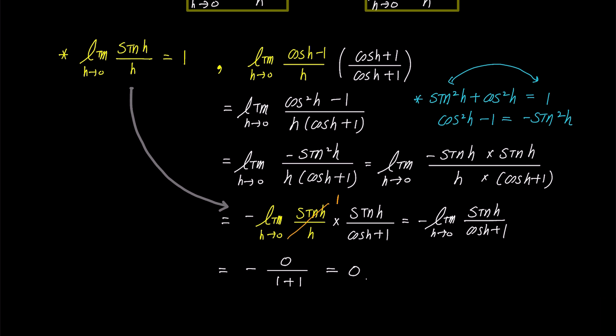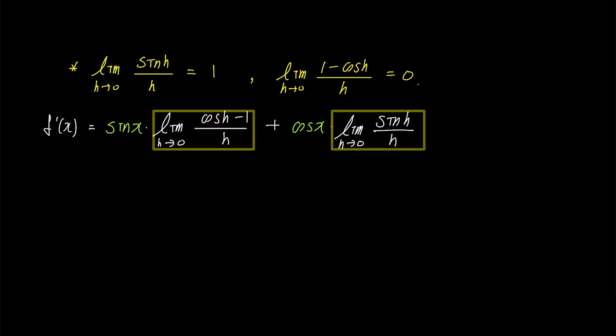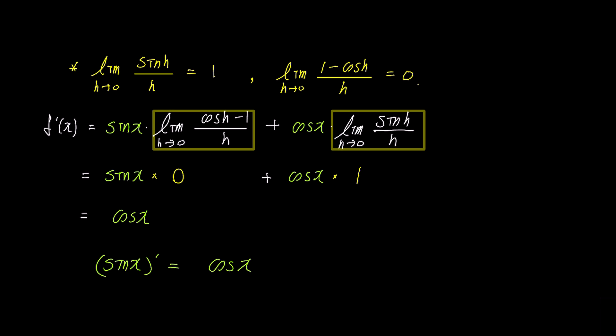Let's summarize the results we have found. We investigated two limits, and when h becomes sufficiently small, we found that the limit of sine h over h becomes 1, and the limit of (1 minus cosine h) over h becomes 0. Previously, we expressed f prime of x in this form, and by substituting the two limit values into the yellow boxes — sine x times 0 plus cosine x times 1 — we are left with cosine x alone. In other words, we have proven that the derivative of sine x is cosine x.